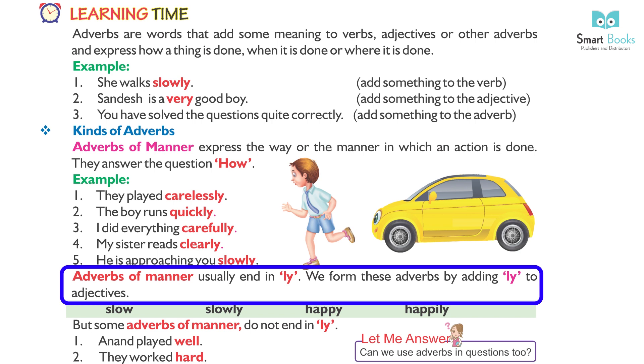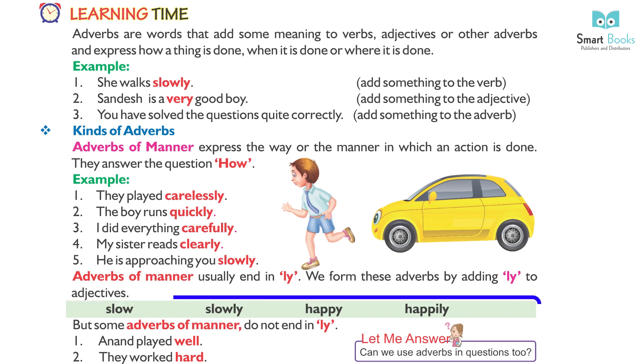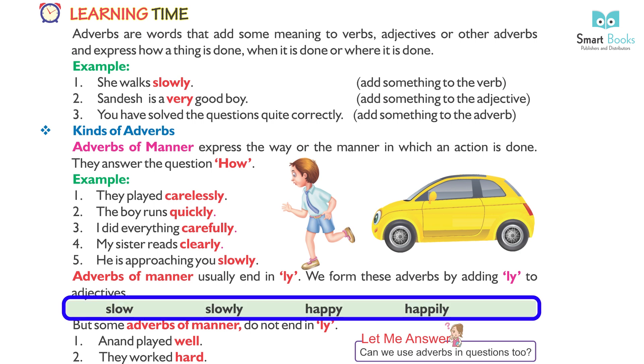We form these adverbs by adding -ly to an adjective. For example: slow becomes slowly, and happy becomes happily.